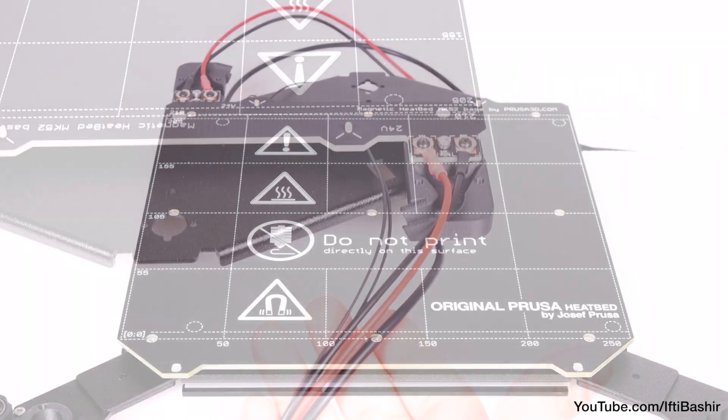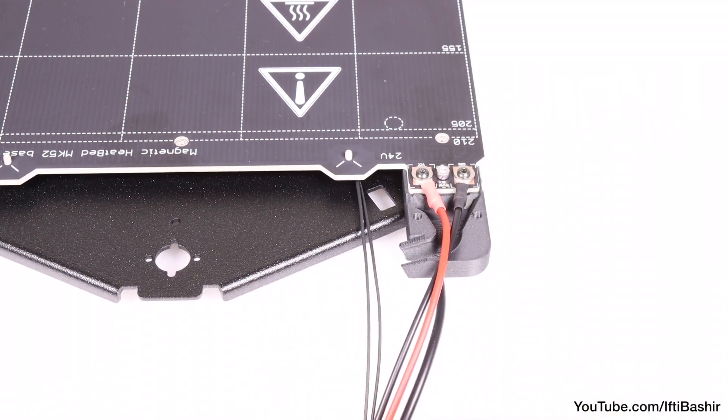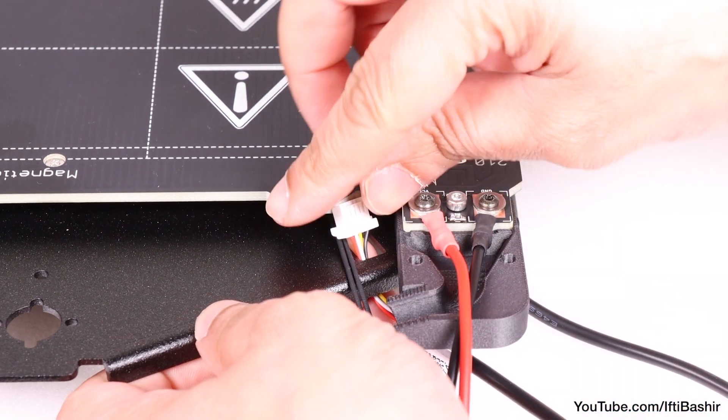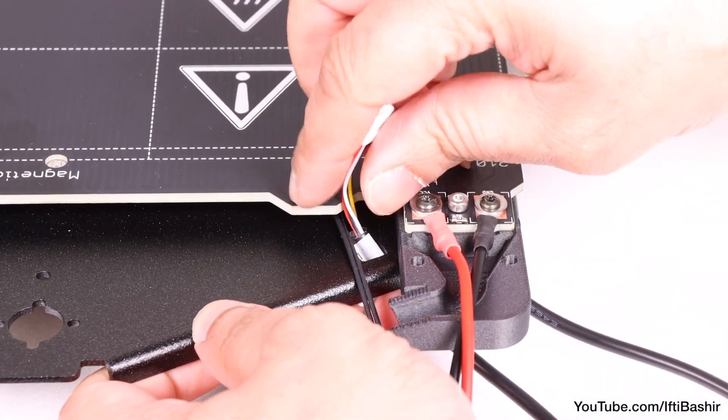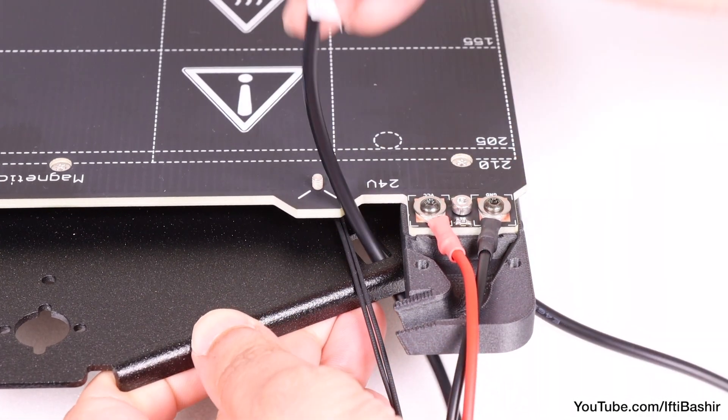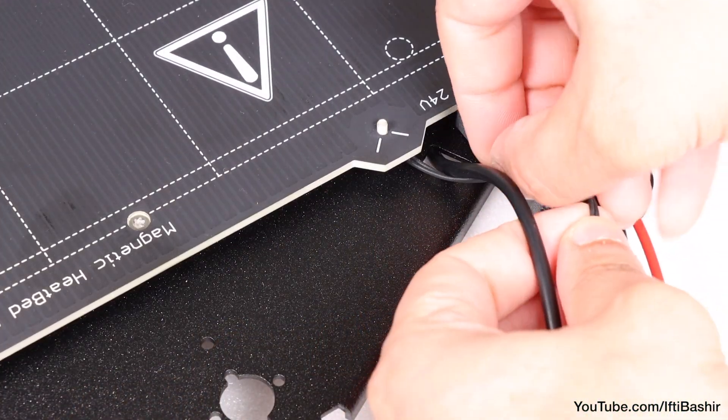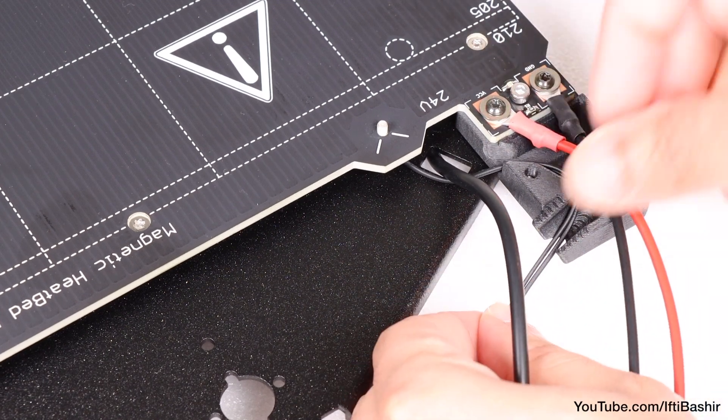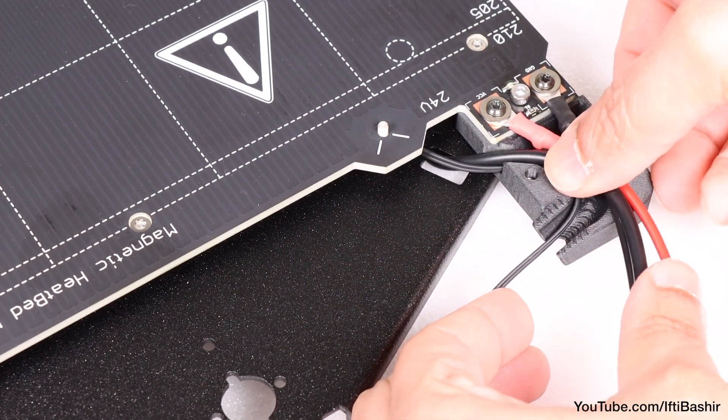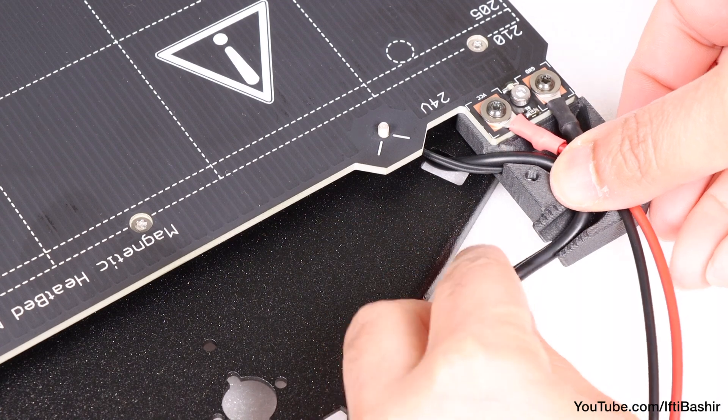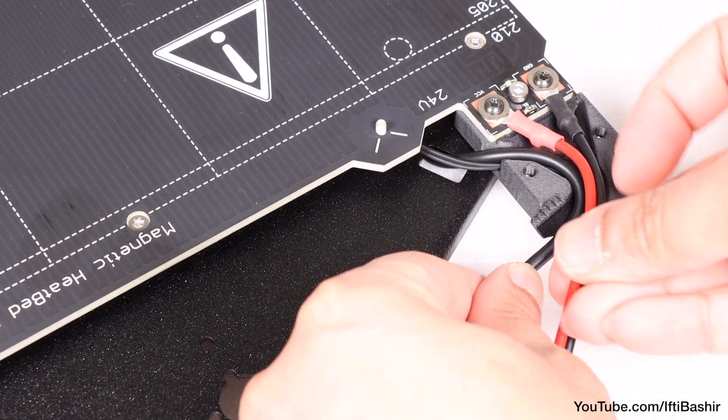With that done, we'll tidy up the rear heat bed cables next. Proceed to feed the LED light strip cable in from the bottom and through the rectangular cutout, after which we position the heat bed thermistor cable under the LED strip cable and through the channel. Route the LED strip cable over the top, through the same channel, followed by the two power cables.